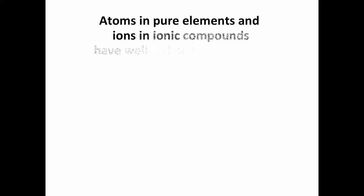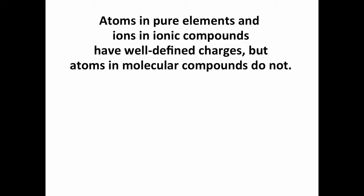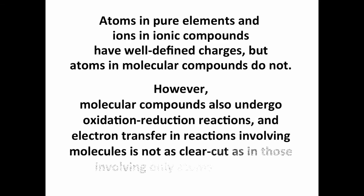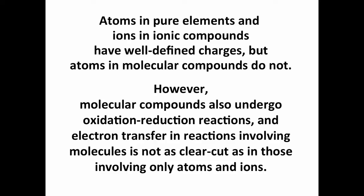In examples like the ones we just did, they're pretty easy to deal with because we're dealing with atoms and ions in ionic compounds where the charges are well-defined and it's easy to track gain and loss of electrons. But if we have molecular compounds, things aren't quite as simple — we don't have well-defined charges even though we still have oxidation-reduction. So in molecular compounds, electron transfer is harder to track; it's not as clear-cut.